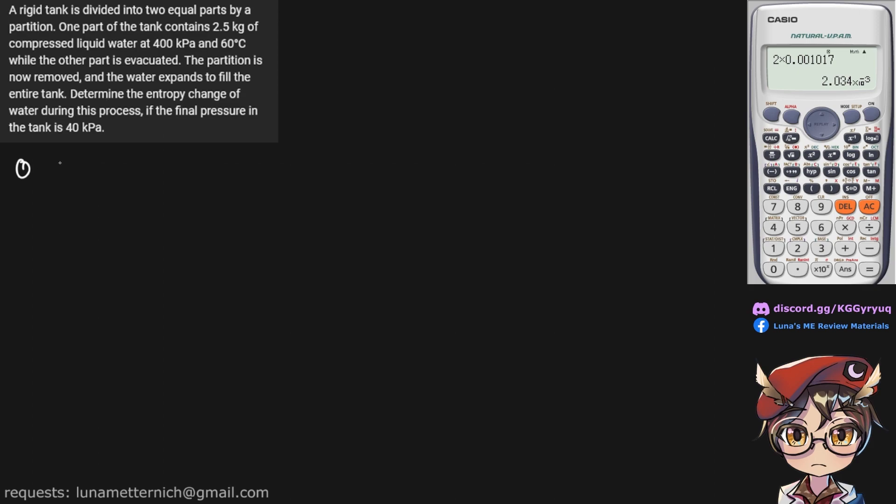So this is our first state. We have the mass of the water that is 2.5 kilograms. We have a rigid tank. There is a partition in the middle, so that's half of the tank. And over here we have our water. And the temperature of that water is 60 degrees C and its pressure is 400 kPa.